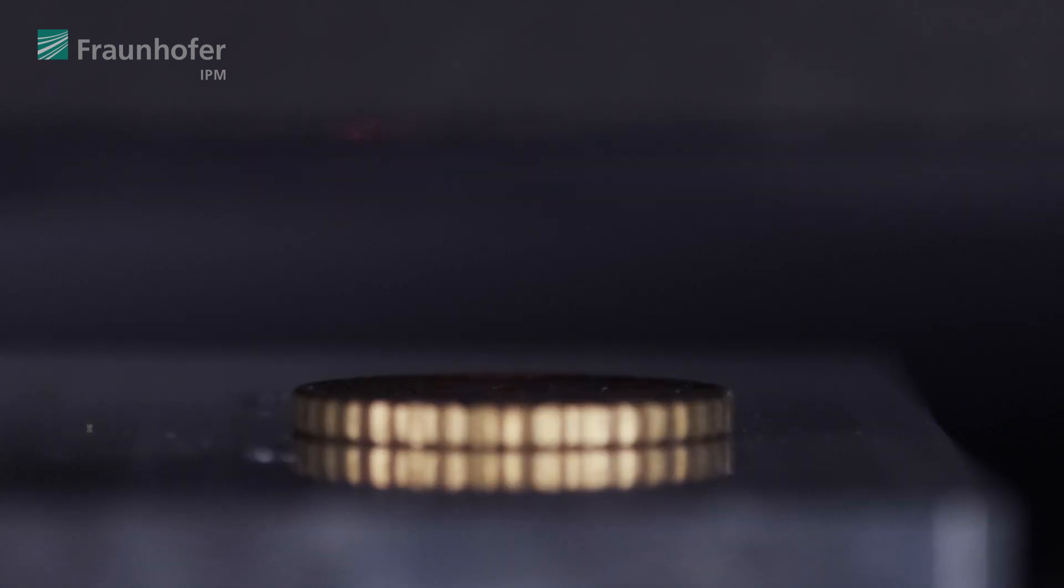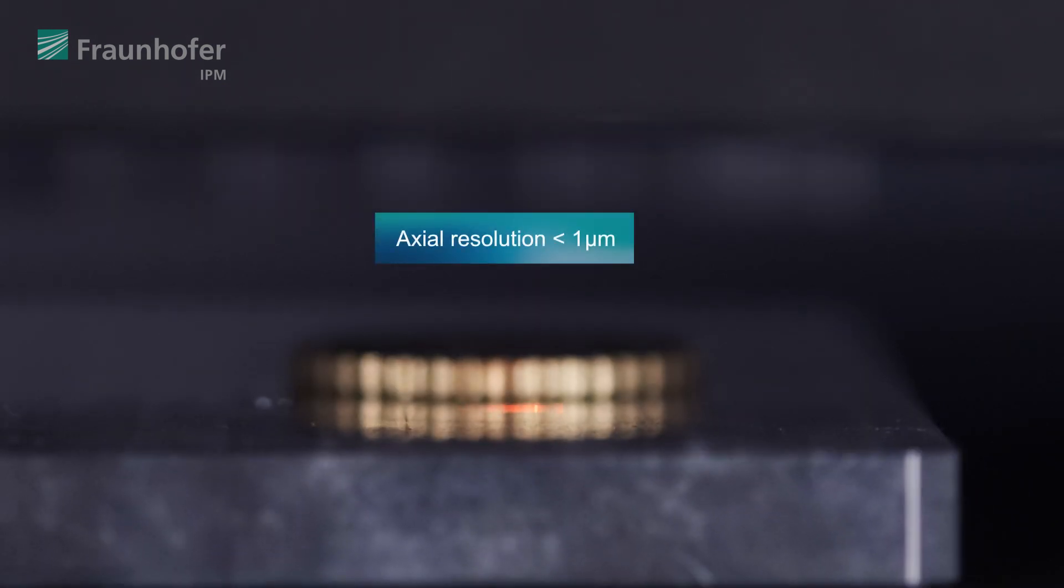Often, interferometry is limited to highly reflective objects like mirrors. To measure rough surfaces as well, multi-wavelength holography is a great measurement principle. It's camera-based, so you can get millions of 3D measurement points per second. The actual resolution below 1 micrometer allows precise knowledge of the structure of the object you are measuring.